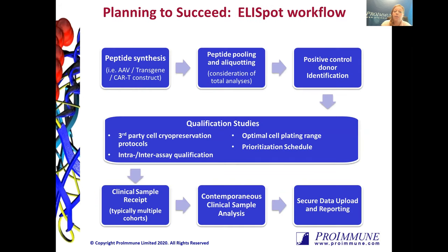We've been offering the ELISpot assay for many years, and the expertise we provide will assist from the very early planning stages all the way through data reporting and discussion. One of the first steps in planning for a successful ELISpot is understanding the limitations of your study and what you'll be able to do with the samples you're obtaining. For example, if you plan to draw a very low volume of blood, this will result in a low cell yield, limiting the number of antigens you can evaluate. Proimmune will work closely with you to determine the study layout, the number of antigens to test, and the number of cells needed from each donor. Once the antigen source is determined, we can provide the peptide synthesis for you.